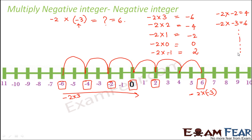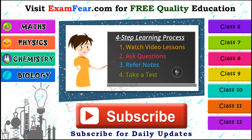Whenever you multiply two negative integers, the result is always a positive integer. The simple tip to remember: whenever multiplying two negative integers, simply find their product and put a positive sign.